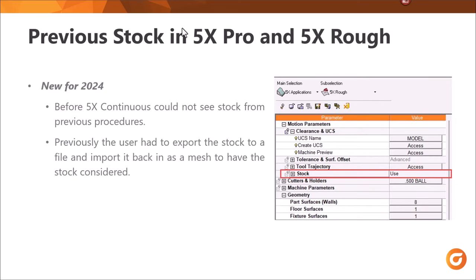The last thing we'll cover today, briefly, is previous stock in 5X Pro and 5X Rough. We're going to look at this quickly because it's new in 2024. The solution is so much easier than before — instead of bringing a mesh in and out of the file to get it to see the previous stock, all we have to do is switch the stock to use, and now it will see the previous stock without having to mess around with it. It's a small setting that has big impact.